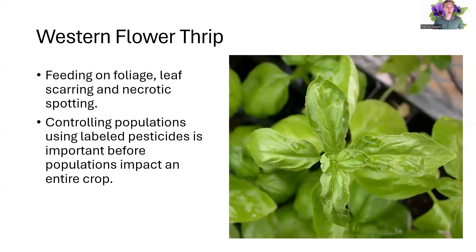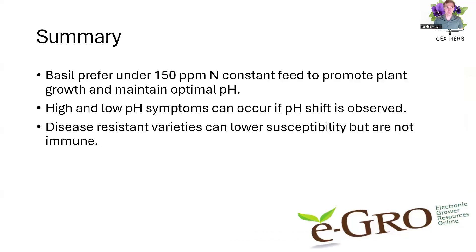Thrips will feed on the foliage with scarring and necrotic spotting, preventing the leaf from fully developing. Controlling your populations using labeled pesticides is important before the population impacts your entire crop.